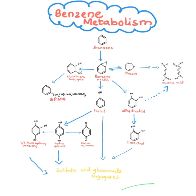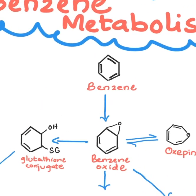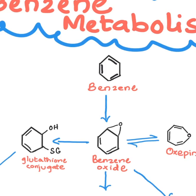Hello, today I'm going to discuss benzene metabolism. It's very important because benzene metabolites can be very toxic to humans. First of all, benzene metabolism occurs primarily in the liver through phase one metabolism, which is carried out by CYP2E1.